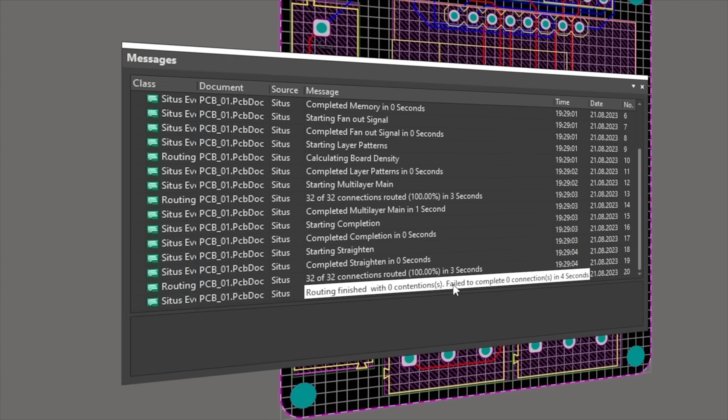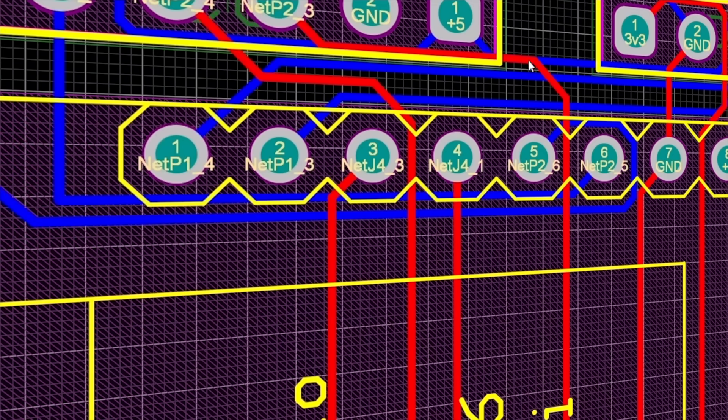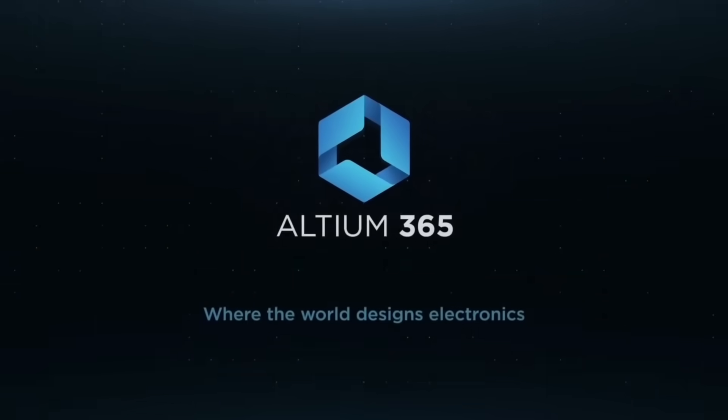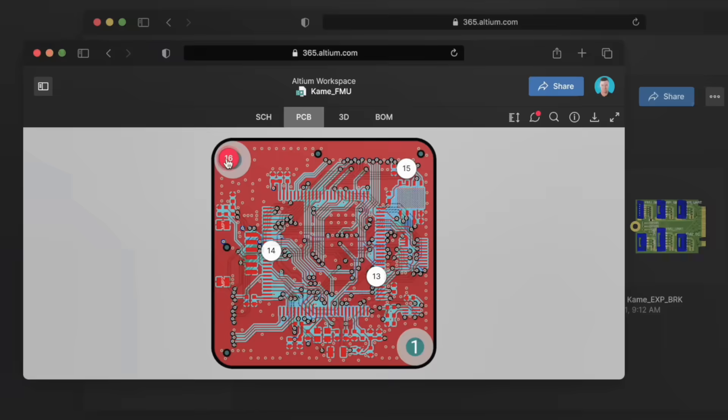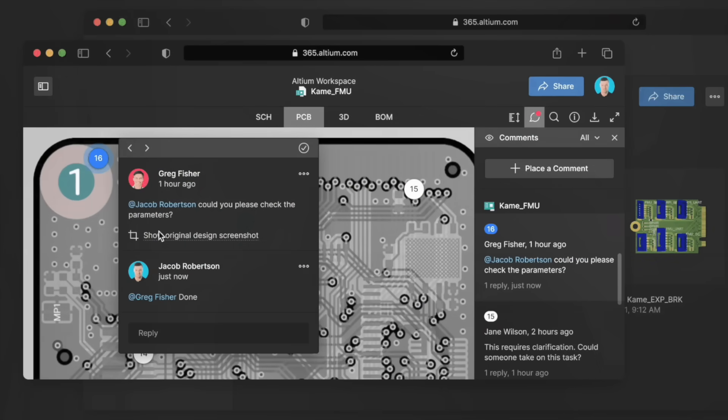In the meantime, if you need support during the design process and teamwork is required, Altium 365 is the best solution. You have full control over project sharing and management with centrally stored design data, configurable access rights, and roles.